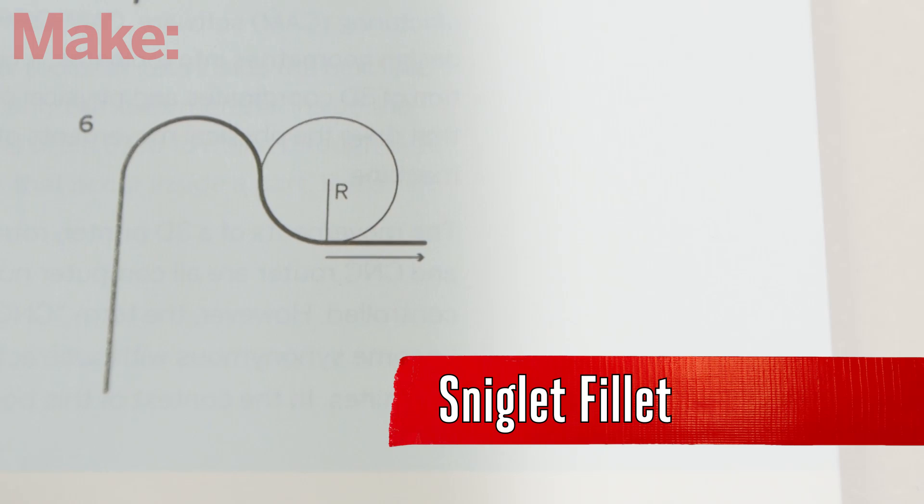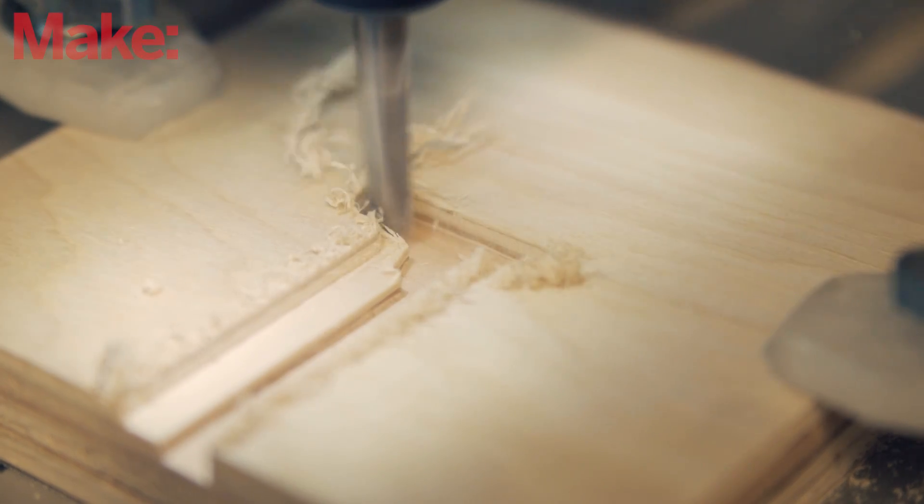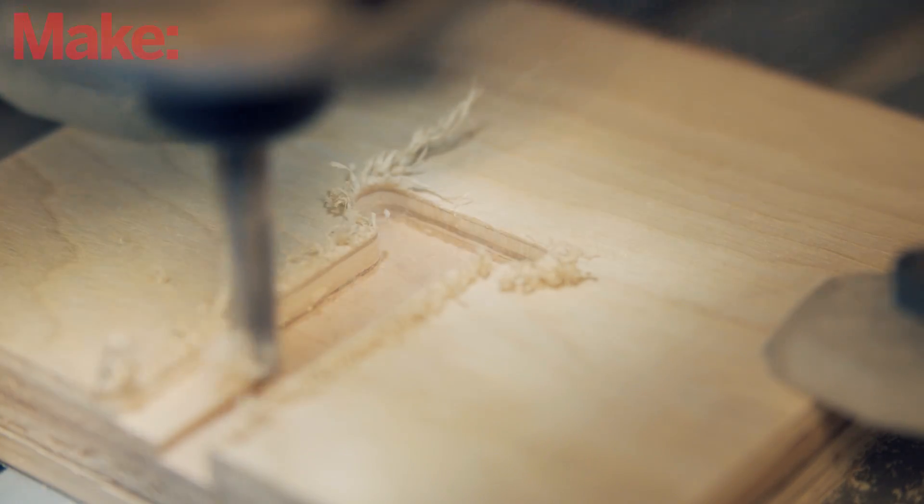The last fillet we'll be talking about today has kind of a funny name. The Sniglet. Sniglets look a lot like T-bones, but they allow the router bit to flow much more smoothly through the cut, preserving momentum which can lead to a much cleaner result.